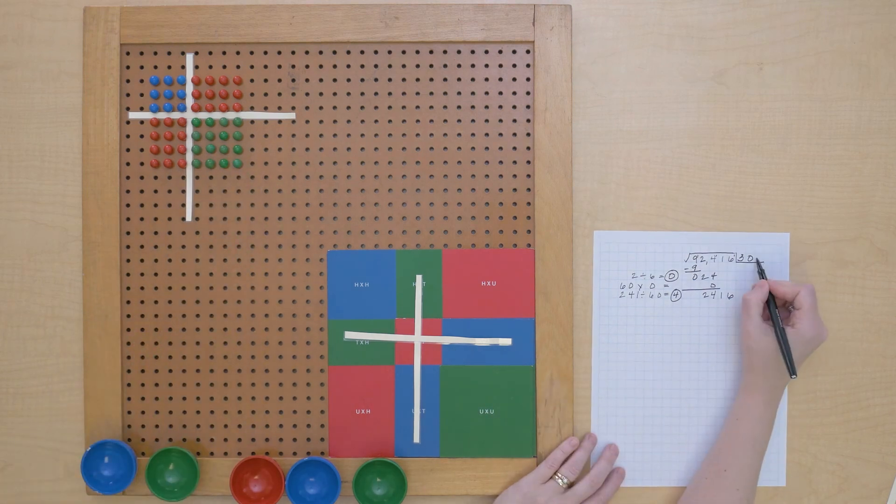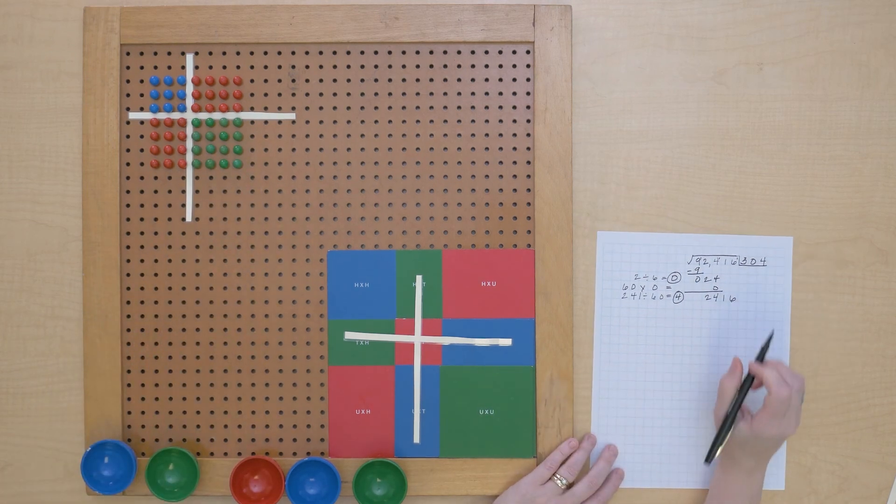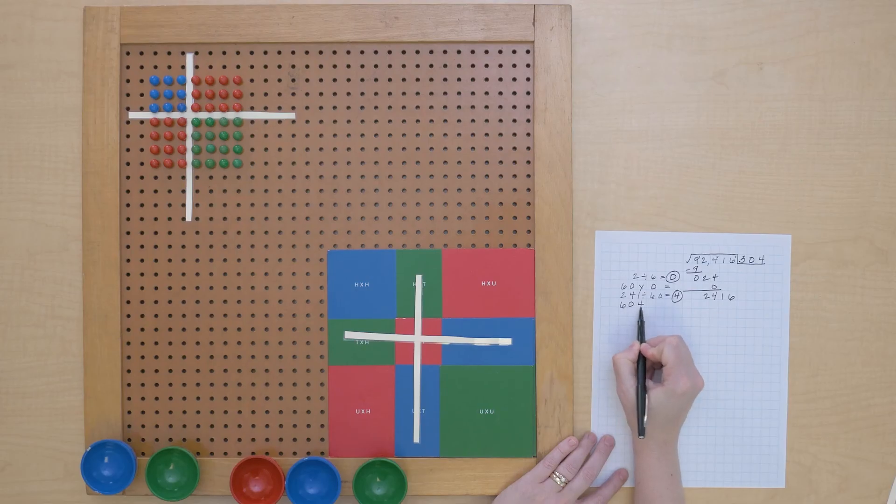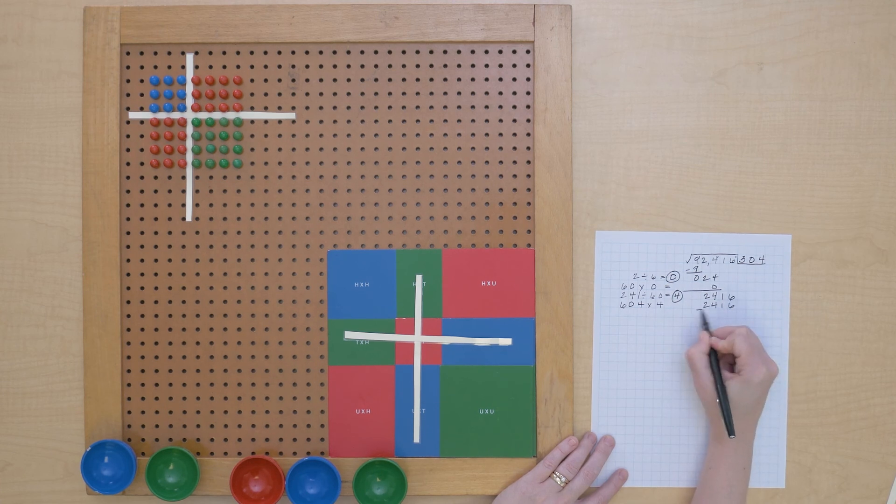We were right. So let's find out how much we used. Annex that root times that equals 2416.